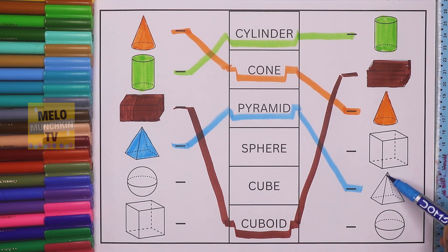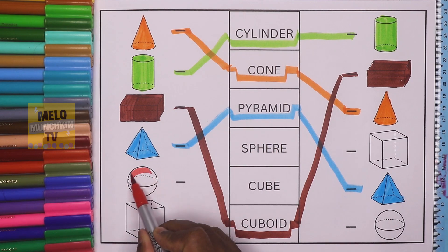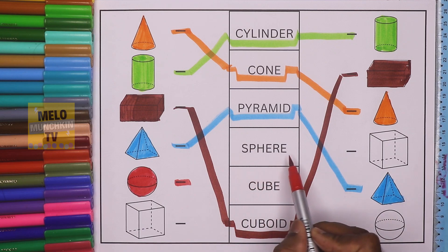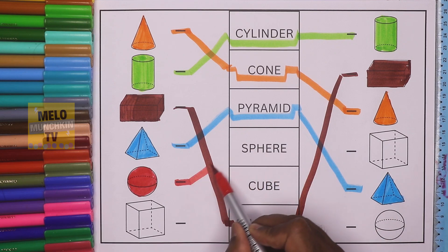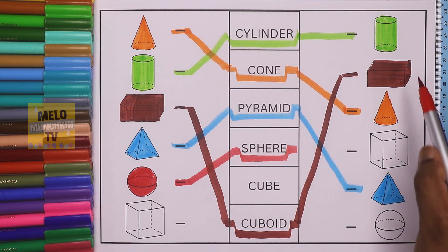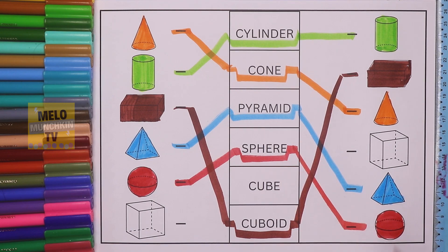Next, I'll take red color to color this shape called sphere. Sphere is written here — sphere. I need to find it from the right-hand side. This is cube and this one is sphere.